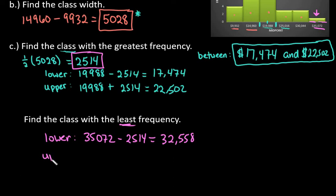Our upper limit, we would do the same thing, the 35,072, and we would add the 2,514, and that would give us 37,586.